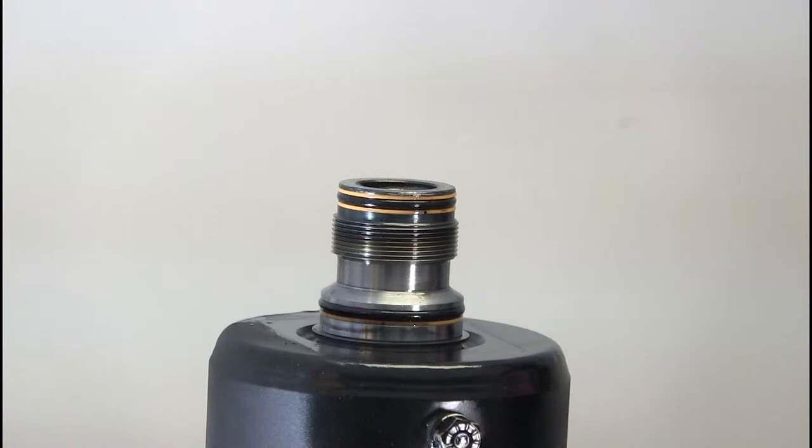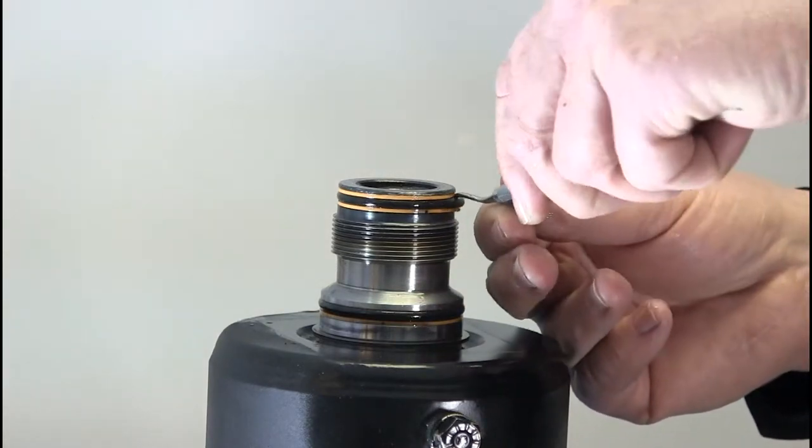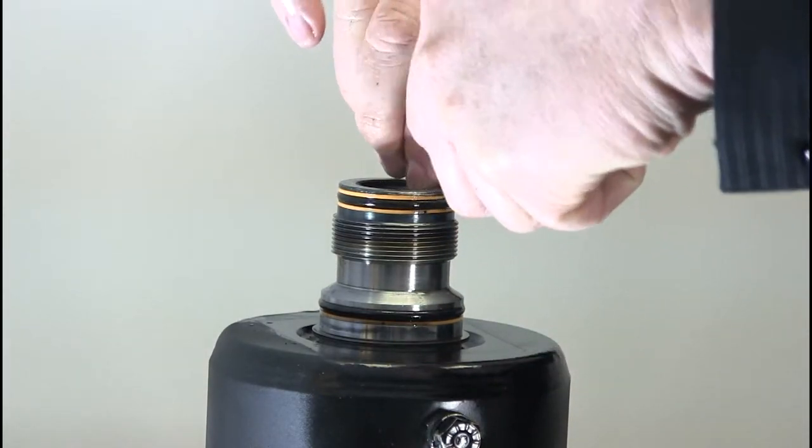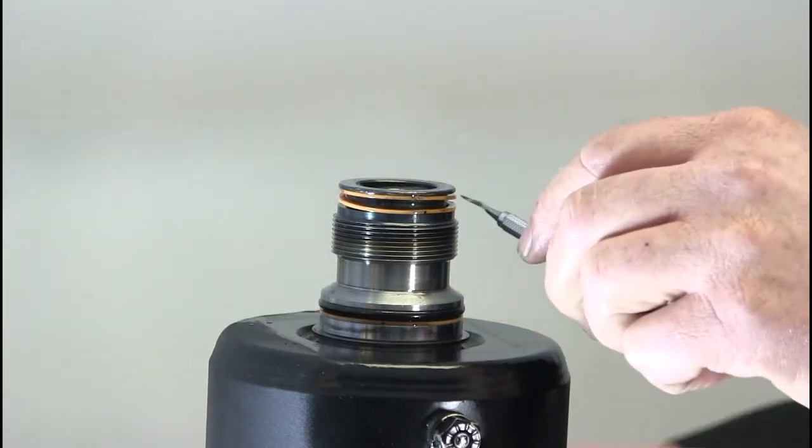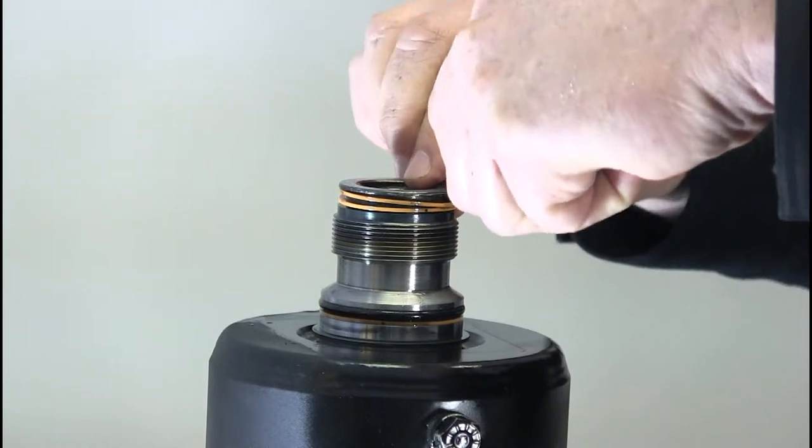You then want to remove the seals, being careful not to scratch the metal seal surface. Using a pick, hook the black upper seal first, pull it off, and then you can grab the orange seals.